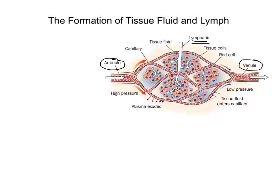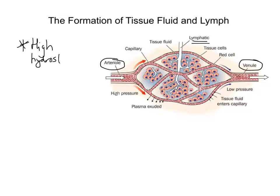We can see from the picture that blood comes in at high pressure. Now I'm not going to talk in detail about blood — I have done a separate video specifically about blood and its components. In the capillaries, the blood is under what we call high hydrostatic pressure at the arterial end. That blood is passing from the arteriole into the capillaries, and the high hydrostatic pressure pushes fluid through the permeable capillary walls.